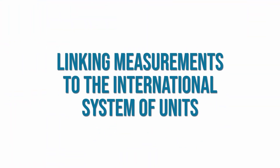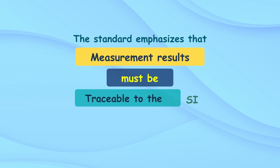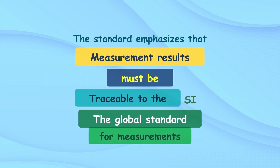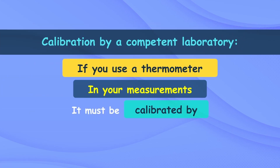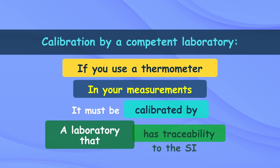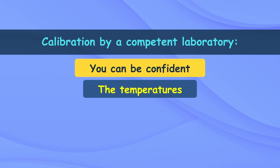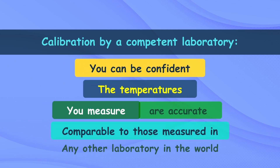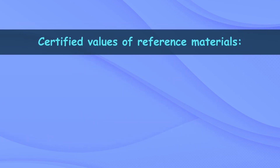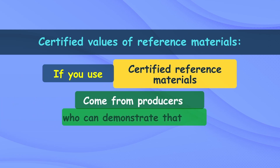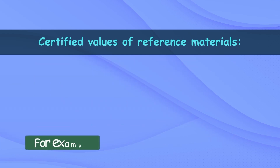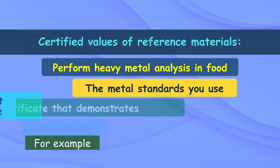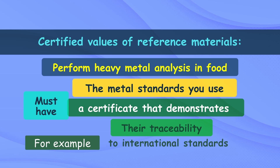The standard emphasizes that measurement results must be traceable to the International System of Units. This traceability can be achieved in several ways. First, calibration by a competent laboratory: if you use a thermometer, it must be calibrated by a laboratory with traceability to the SI, ensuring your temperatures are comparable to those measured anywhere in the world. Second, certified reference materials must come from producers who can demonstrate traceability to the SI — for example, metal standards used in heavy metal analysis in food must carry certificates demonstrating traceability to international standards.